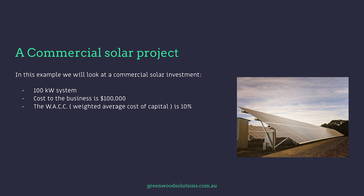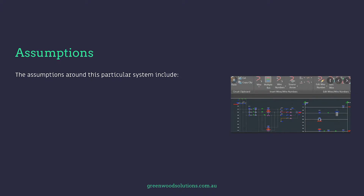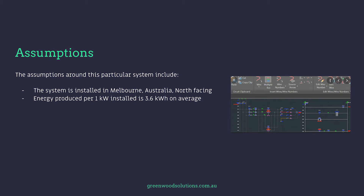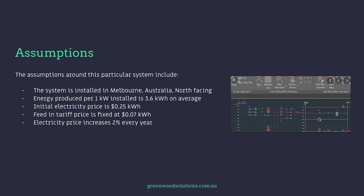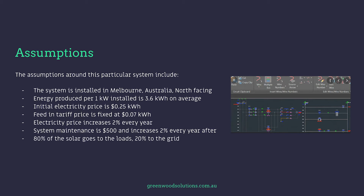The WACC — weighted average cost of capital — is 10%, and the length of the investment is six years. Solar systems last a lot longer, but we'll start with six years. The assumptions include: installed in Melbourne, Australia, north-facing; energy produced per kilowatt installed is 3.6 kilowatt hours on average; initial electricity price is 25 cents per kilowatt hour; feed-in tariff is fixed at 7 cents per kilowatt hour; electricity price increases 2% every year; system maintenance is $500 per year, increasing 2% per year; 80% of the solar goes to the loads and 20% to the grid; panels degrade 2% output in the first year, and 0.25% every year after that.